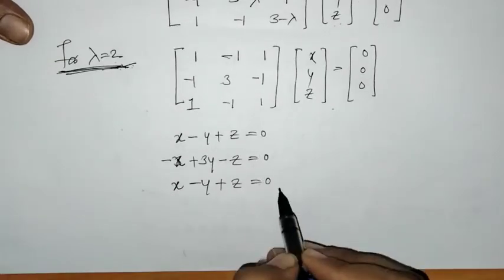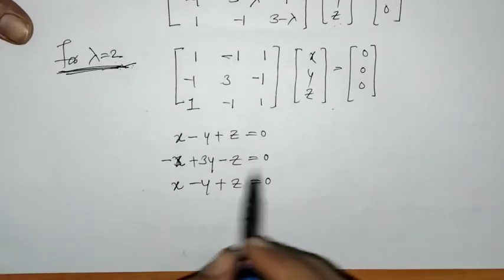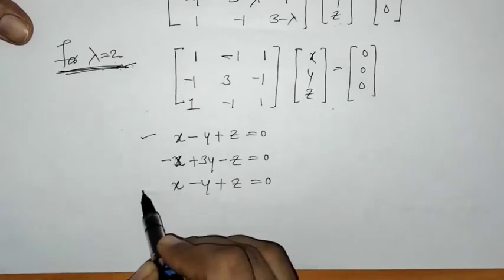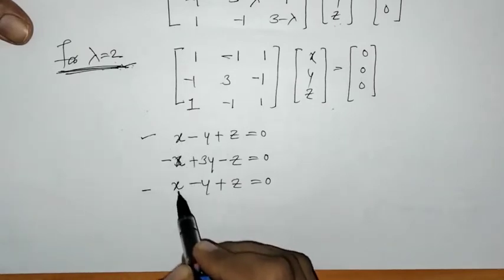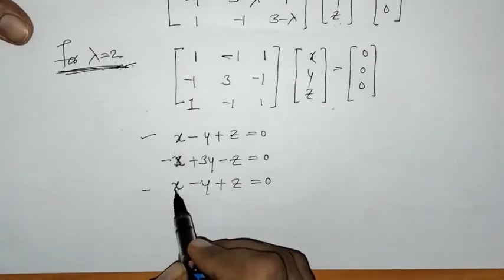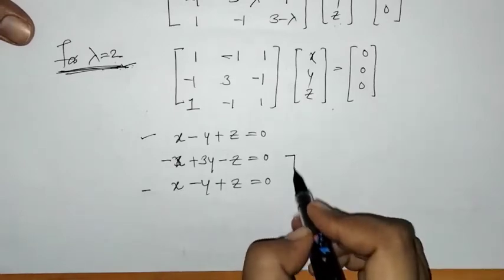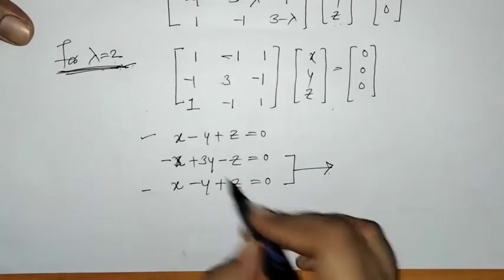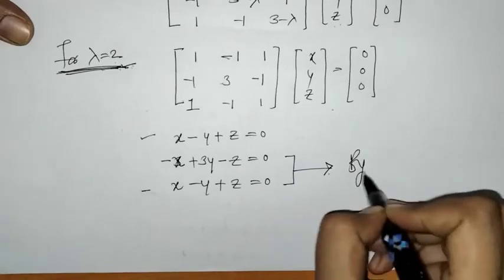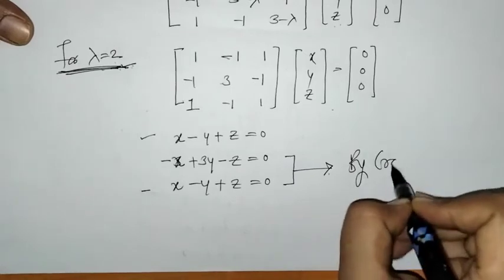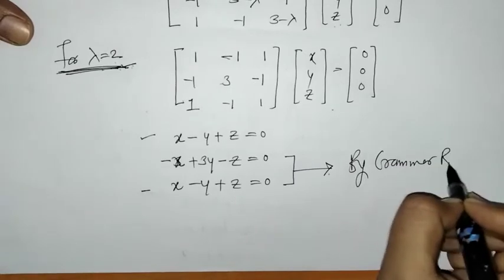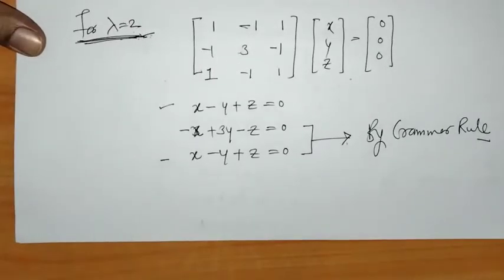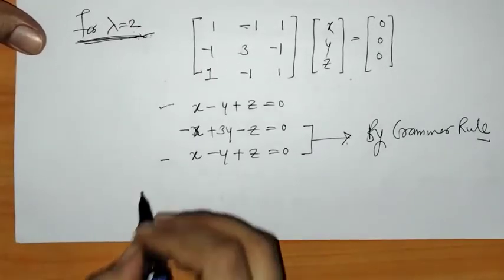Now we solve these equations for the values of x, y, z. We note that the first and third equations are equal, so we consider just these two independent equations and solve by Cramer's rule.